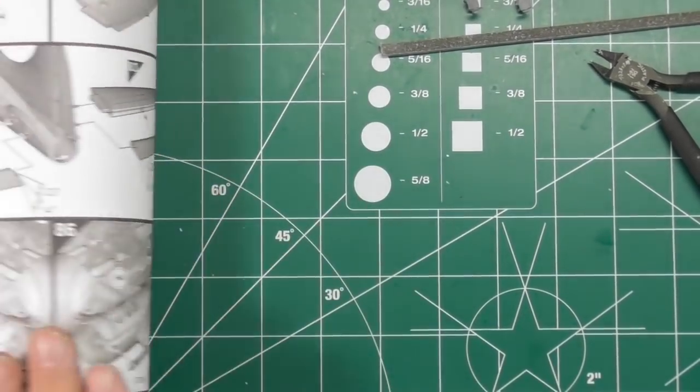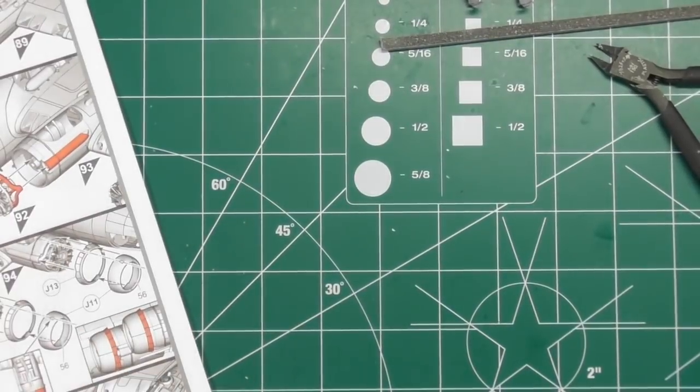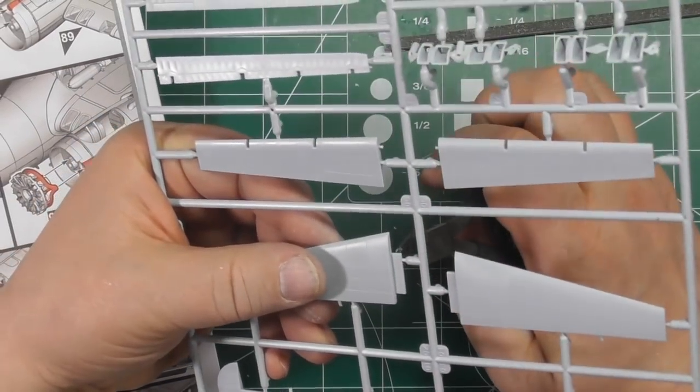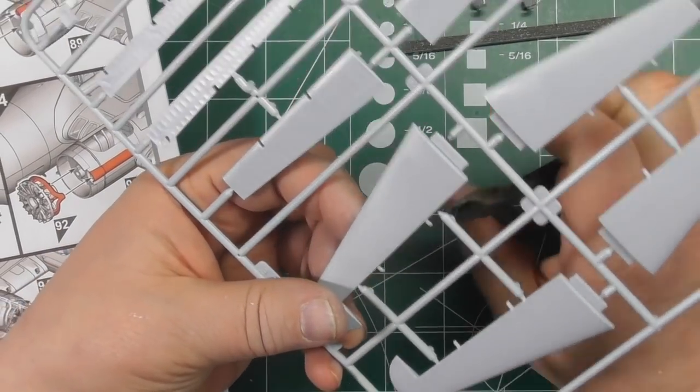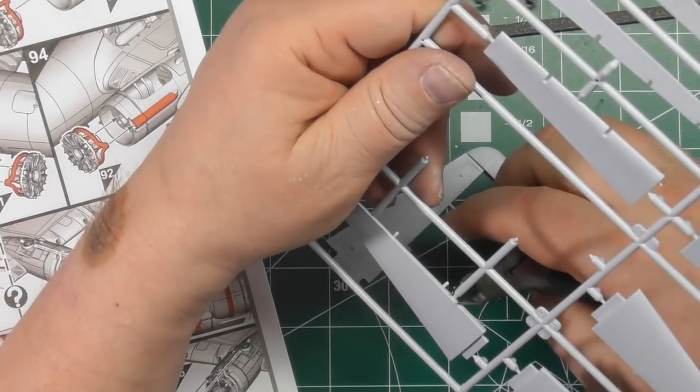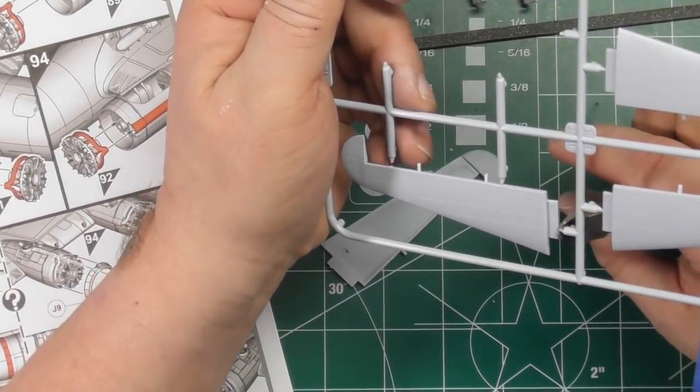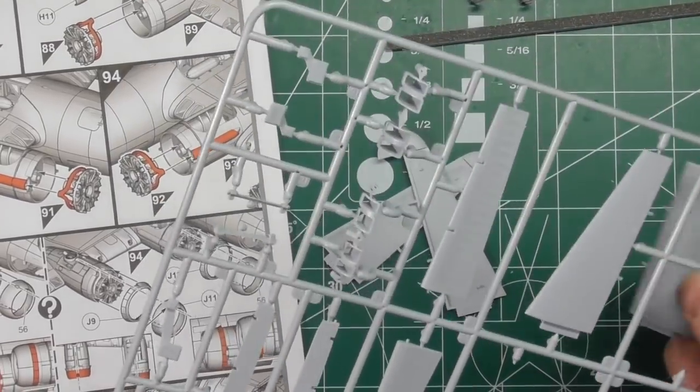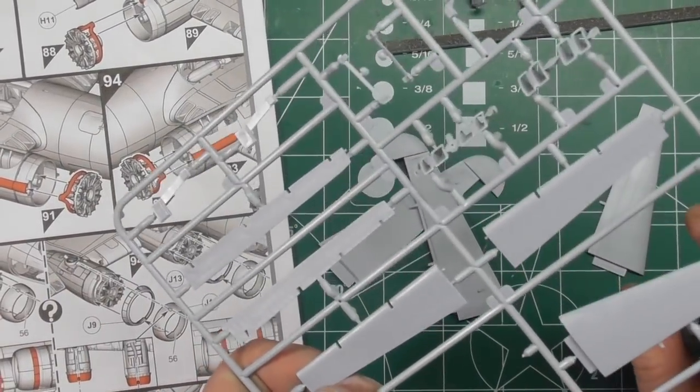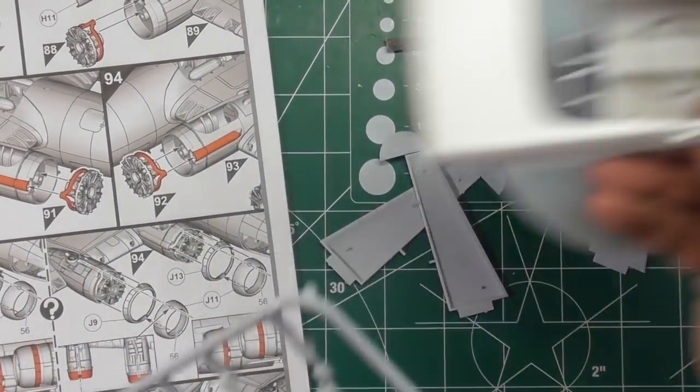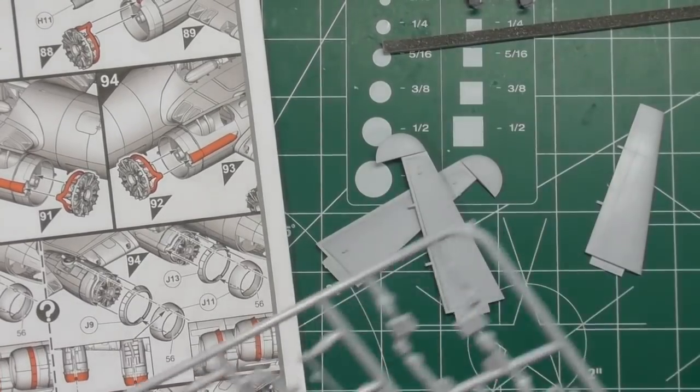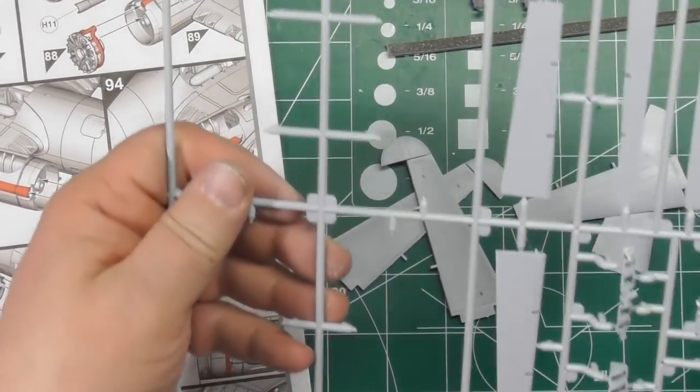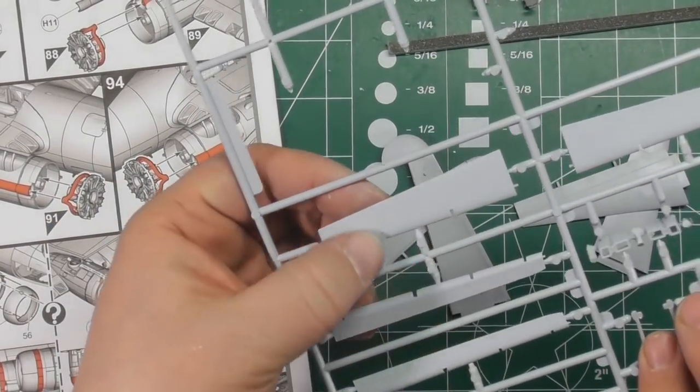Can do the elevators. E1, 2, 3, and 4. I find if I primer things in sections it tends to get a little patchy sometimes. Same with cars. Attach the hood, primer it all together, keeps consistency. The control surfaces are all one piece so they don't need to be sub-assembled.